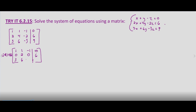Our third row we still have as three, six, negative three, nine. We want this three in the bottom left-hand side — our third row, first column — to be zero as well. So the first two rows remain the same: one, one, negative one, zero; zero, two, zero, six. Then negative three times row one plus row three, because we need negative three plus three to equal zero. Negative three times one is negative three, plus three is zero. Negative three times one is negative three, plus six is three. Negative three times negative one is three, plus negative three is zero. Negative three times zero is zero, plus nine is nine.